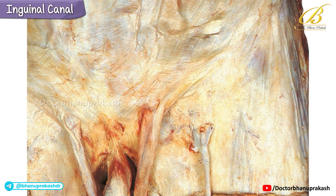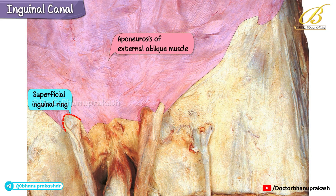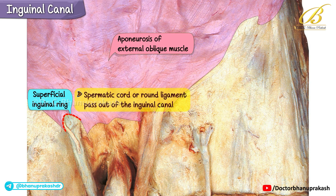Let's take a closer look at the superficial inguinal ring, an important anatomical landmark in the groin region. The superficial inguinal ring is the medial opening of the inguinal canal. Think of it as a small triangular or V-shaped gap in the aponeurosis of the external oblique muscle.